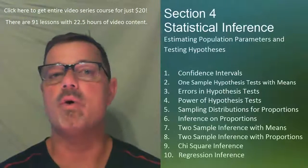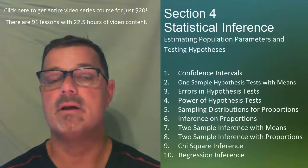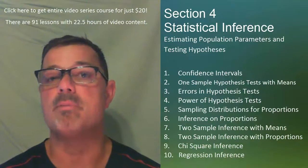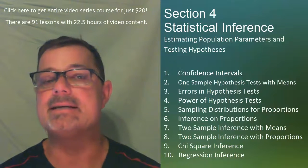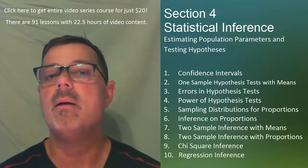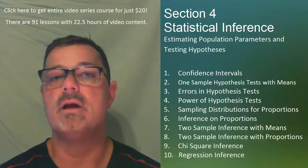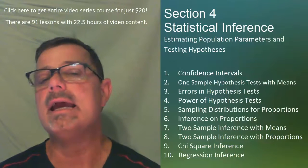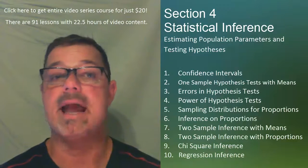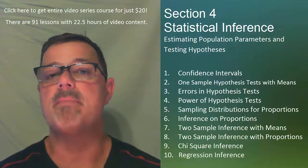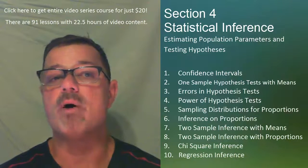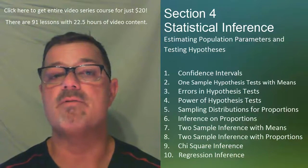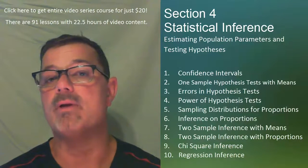We conclude the course in section 4 with statistical inference. In this section, we explore the estimation of population parameters based on sample data and testing hypothesis. Both confidence interval construction and hypothesis testing will be addressed for one and two sample procedures in the estimation of population means and proportions. Possible errors in hypothesis testing and the power of a test are also addressed. We conclude this section with chi-square inference for categorical data and regression inference.